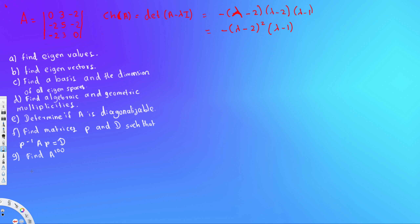Let's begin with part A: find the eigenvalues. To find the eigenvalues we set the determinant of A minus lambda I equal to zero. Since it's a three by three matrix it's difficult to compute, but the determinant is already provided. Setting it equal to zero, we get lambda minus two squared times lambda minus one equals zero, so lambda equals two and lambda equals one.